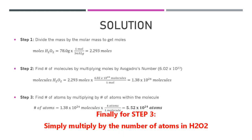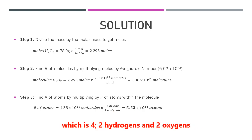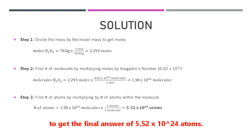Finally, for step three, simply multiply by the number of atoms in H₂O₂, which is 4 — 2 hydrogen and 2 oxygen — to get the final answer of 5.52 times 10 to the power of 24 atoms.